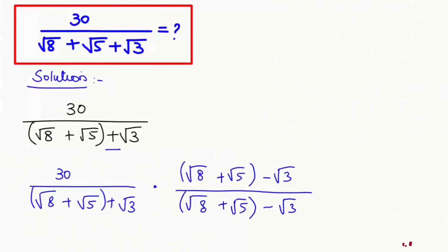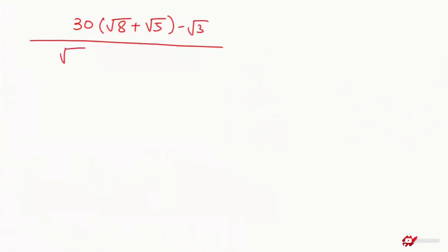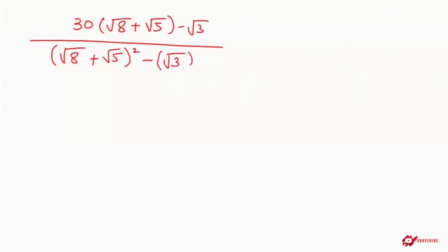Now I am going to multiply it. We get 30 times (root 8 plus root 5 minus root 3) in the numerator, and in the denominator we have (root 8 plus root 5) whole to the power of 2, minus root 3 whole to the power of 2.